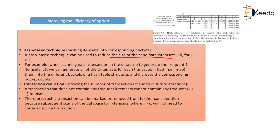Now see this diagram. In this diagram we can see there is one hash table formation, and in this hash table we have some bucket addresses at 0, 1, 2, 3, 4, 5, 6, and they are given the bucket count as 2, 2, 4, 2, 1, 4. The bucket content is also given. We are checking that the hash table has H2 for the candidate 2-item set. This hash table was generated by scanning the transaction table.